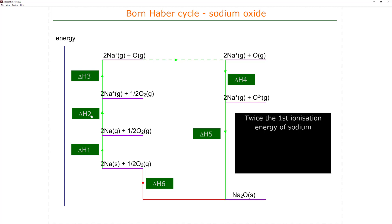The next stage is to turn oxygen molecules into oxygen atoms using the bond enthalpy of oxygen. Although bond enthalpy would give us one mole of bonds being broken, we only need half a mole of bonds to produce one mole of oxygen atoms - this is one half the bond enthalpy of oxygen. At this stage we have two moles of sodium ions and one mole of oxygen atoms.